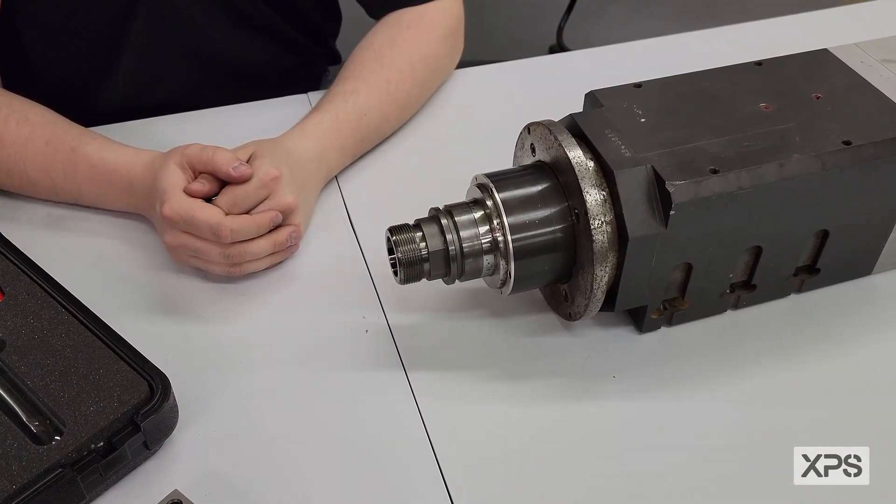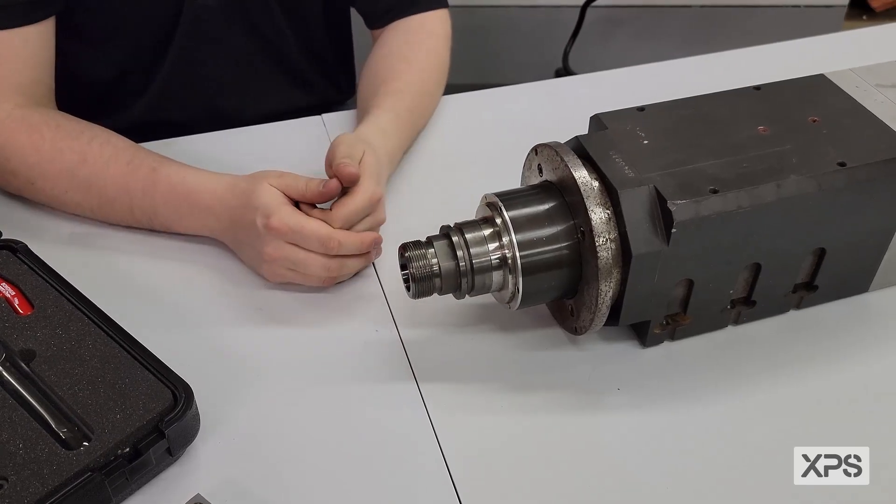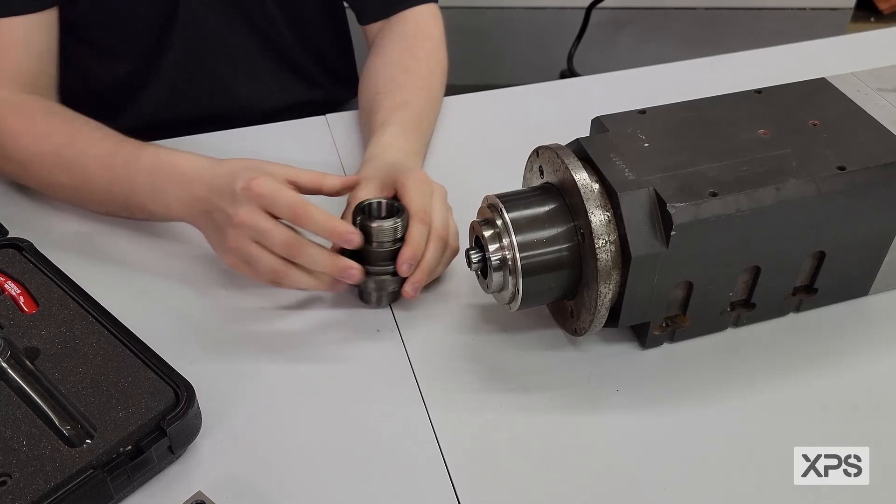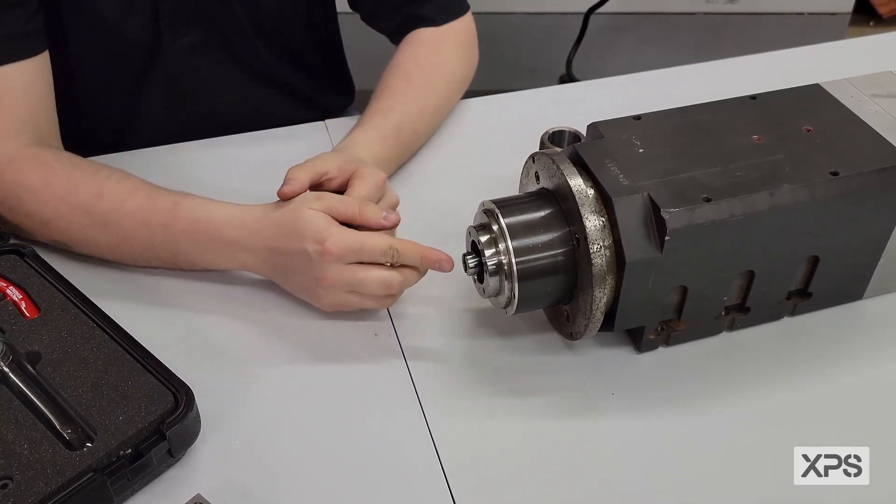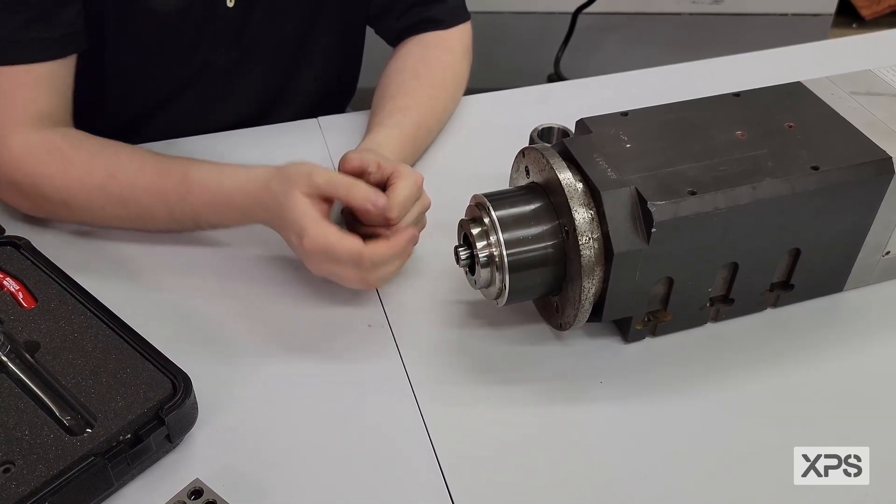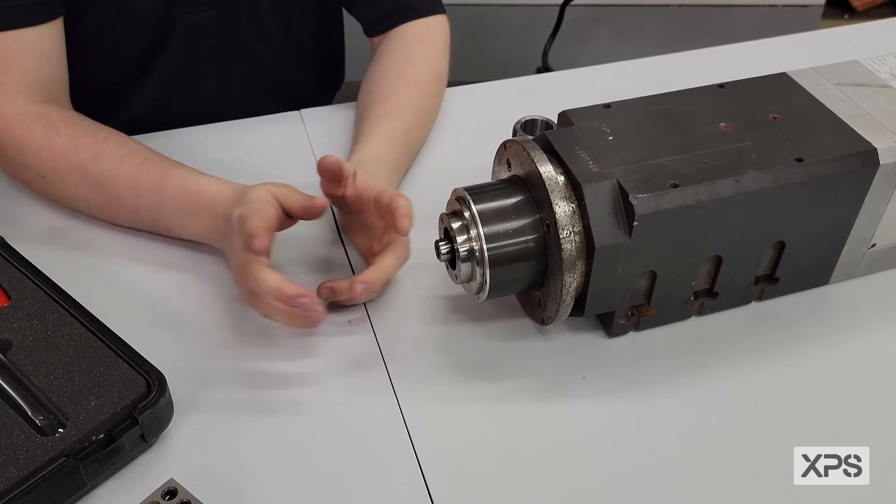The first step we're going to take is removing any tools that are in the spindle. To remove the tool, you're going to activate the drawbar and then we'll put it to the side. Next, you'll see the spool is exposed at the bottom of the spindle. There are two wrench flats on the spool and luckily with the kit that you purchase, there is an included 18 millimeter wrench.